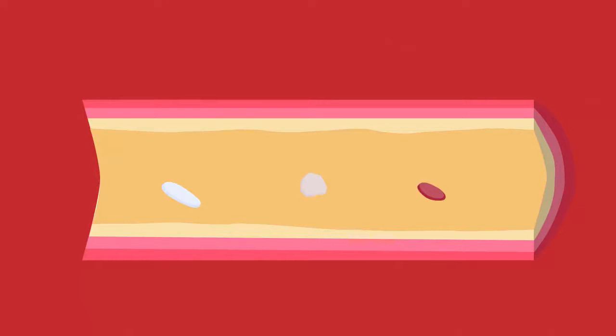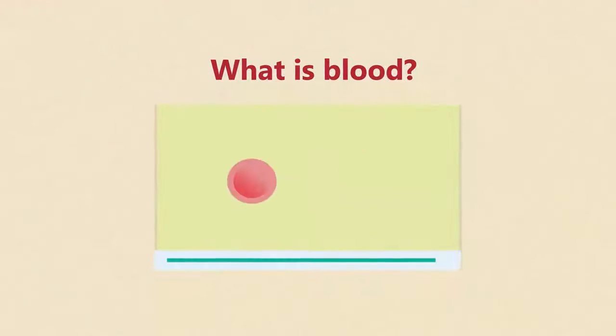You should already know that blood consists of red blood cells, white blood cells, platelets and plasma, but if you have forgotten watch our what is blood video first. In this video we're going to look at white blood cells in particular.